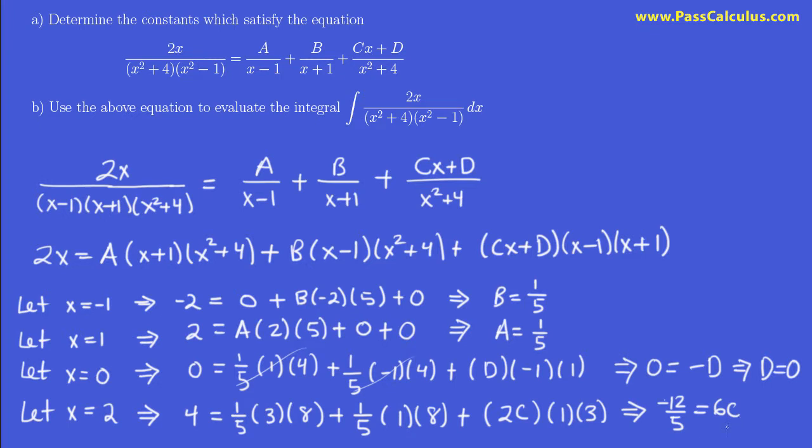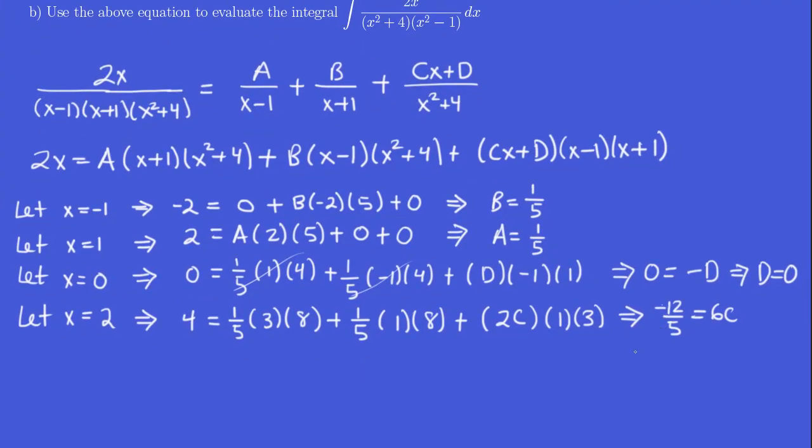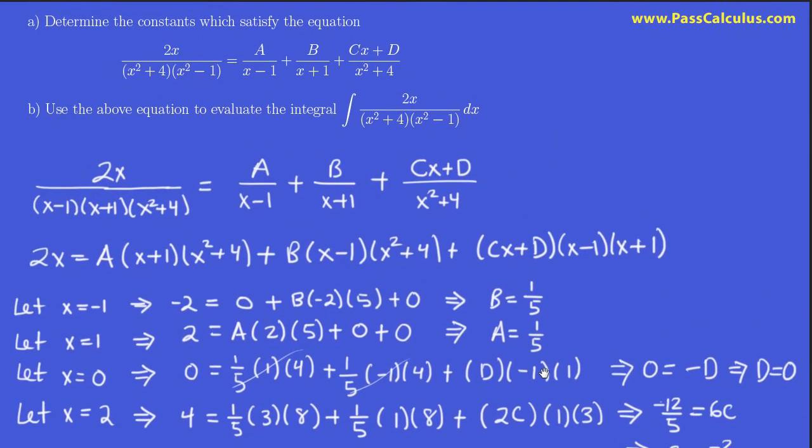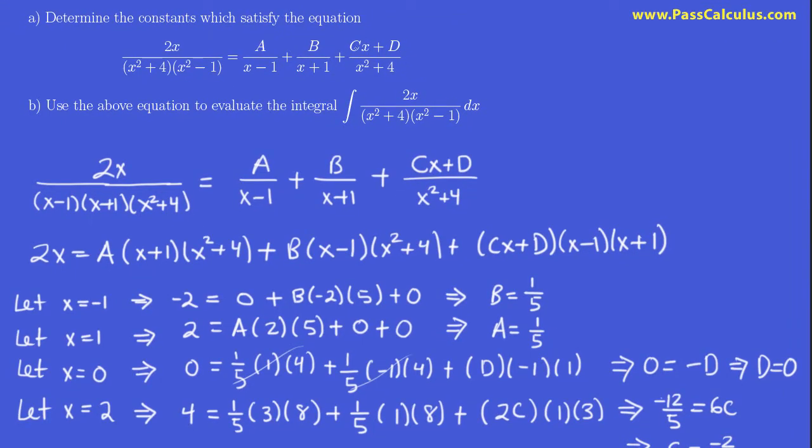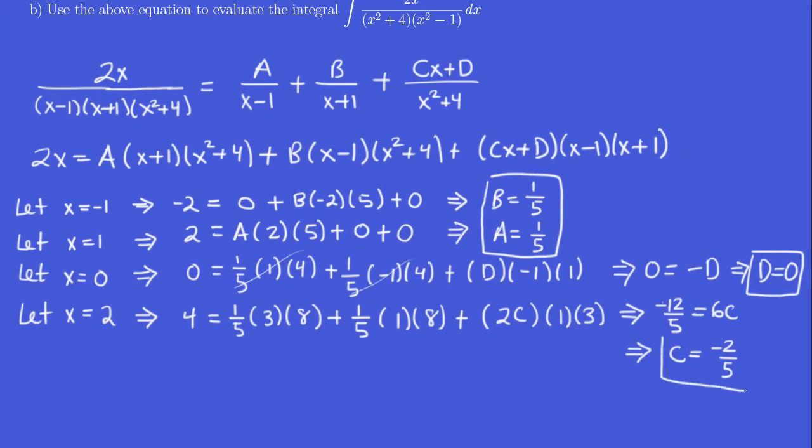So I'm going to need more room here. So we have just determined each of the values of a, b, and c. Great. That actually completes part a, right? Part a just said determine the constants a, b, c, and d, which satisfy this equation. Here are the values of a and b. Here's the value of d. And this here is the value of c.